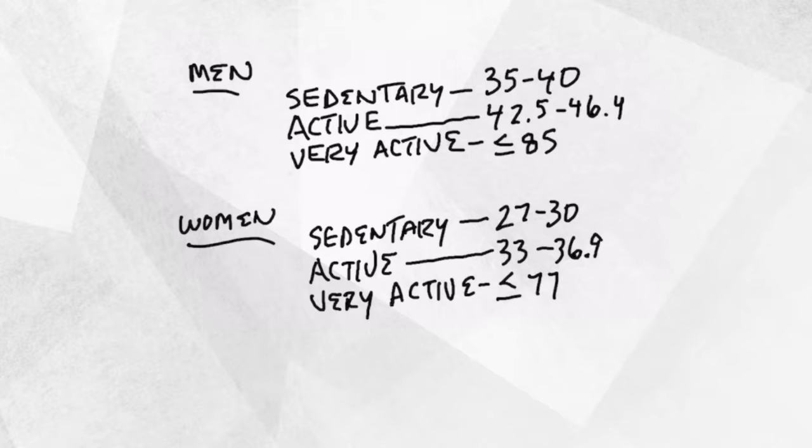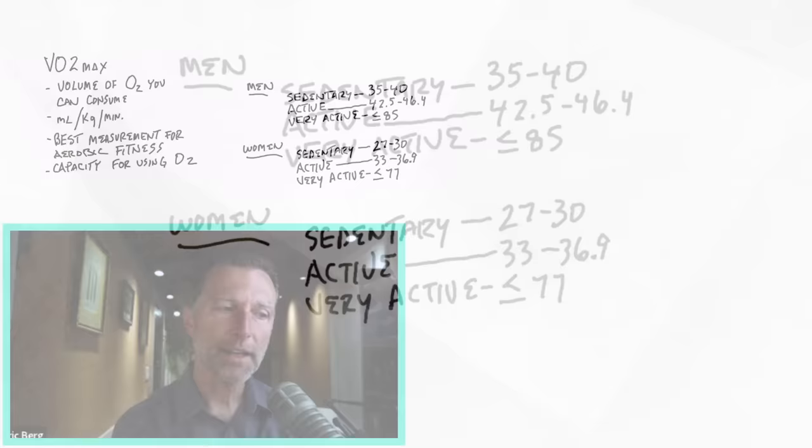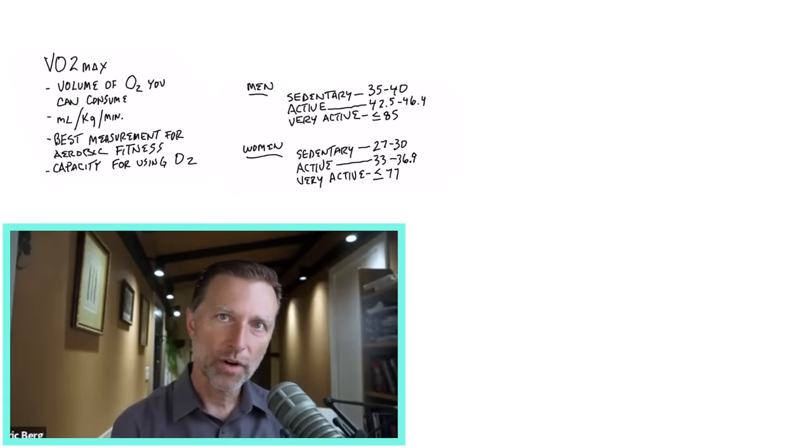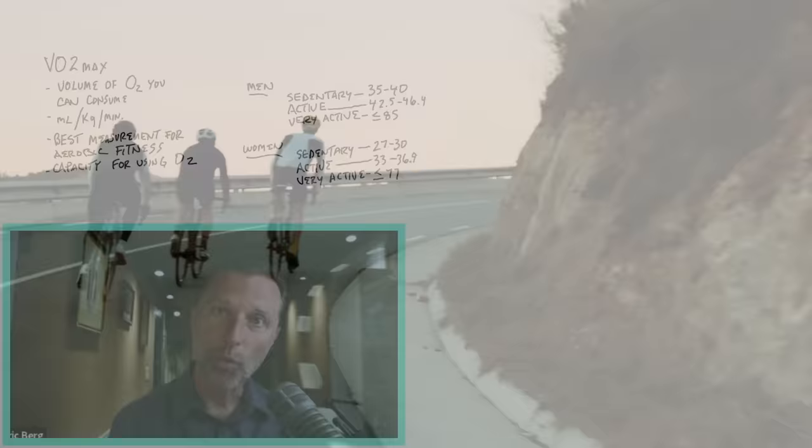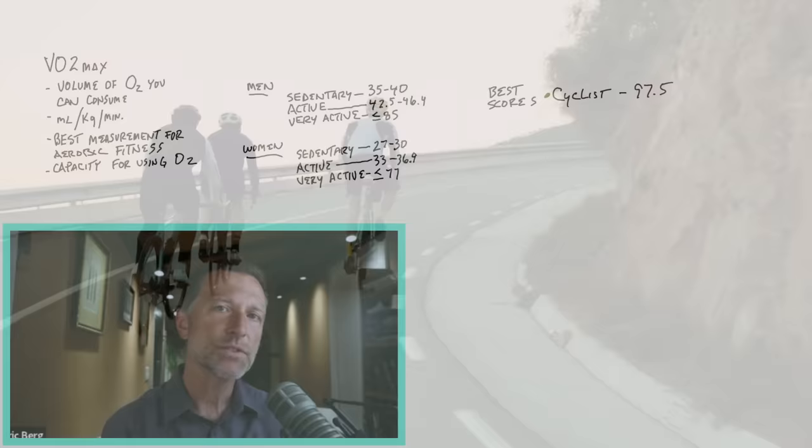But what's interesting, if we look at some of the best scores for VO2 max out there by top athletes, the top three scores, apparently, which is interesting, they're all from Norway. One is a cyclist, and he's the top. Of course, he's 18 years old. But his VO2 max was like 97.5. That is crazy high.